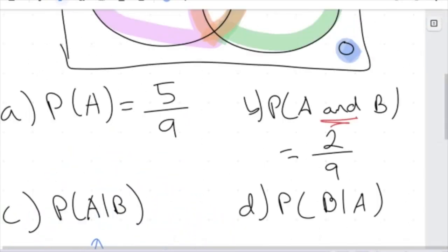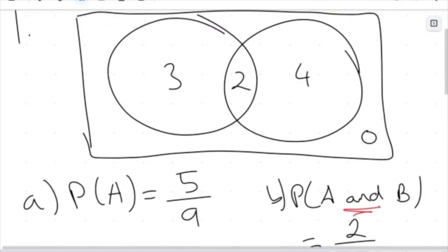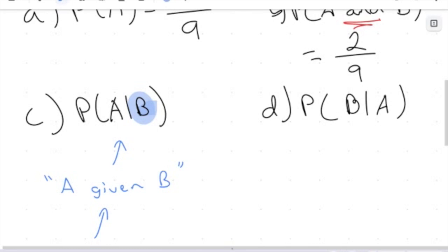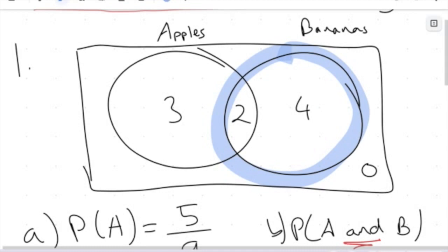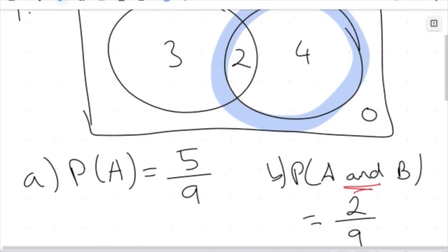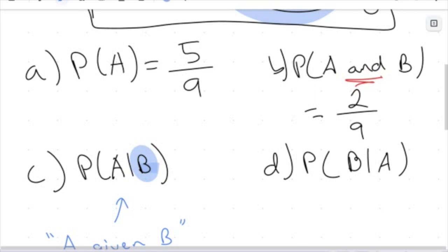Let's go back to our Venn diagram and get rid of the highlighted bits. Remember, this second element — the condition — is given that these students brought bananas. So we are looking at: out of the students that brought bananas, how many brought apples? Or, what is the probability that the students who brought bananas also brought apples? My conditional probability changes the denominator — it's no longer going to be 9, because we're just considering the students that brought bananas.